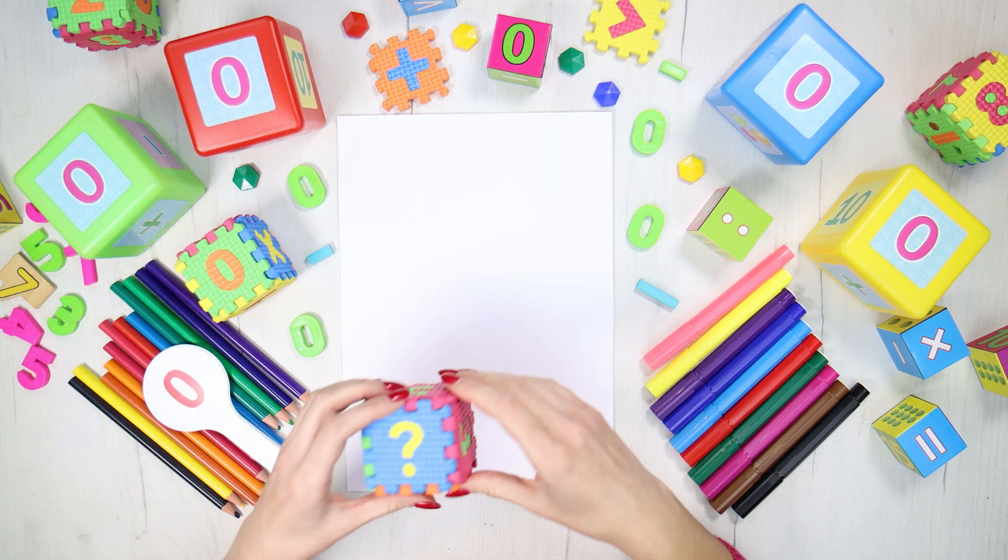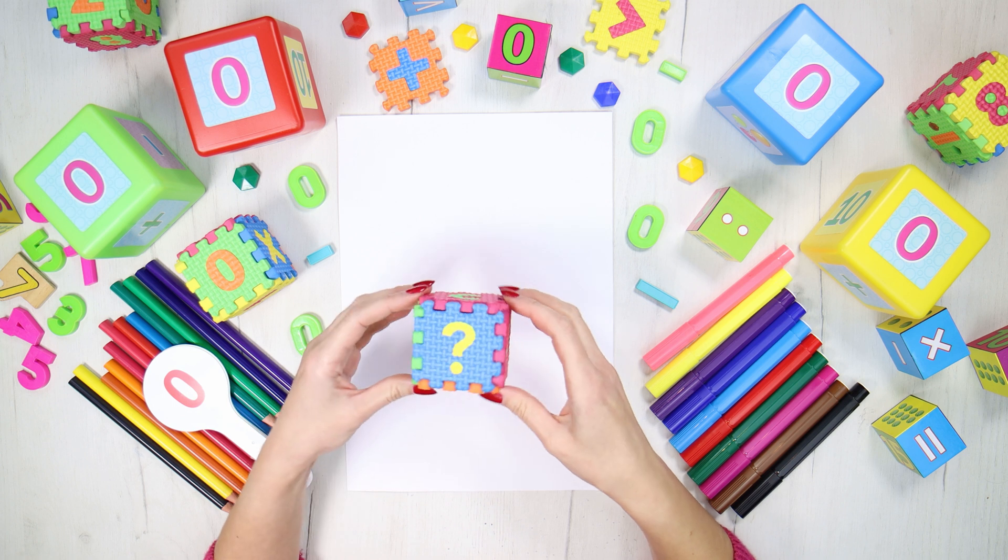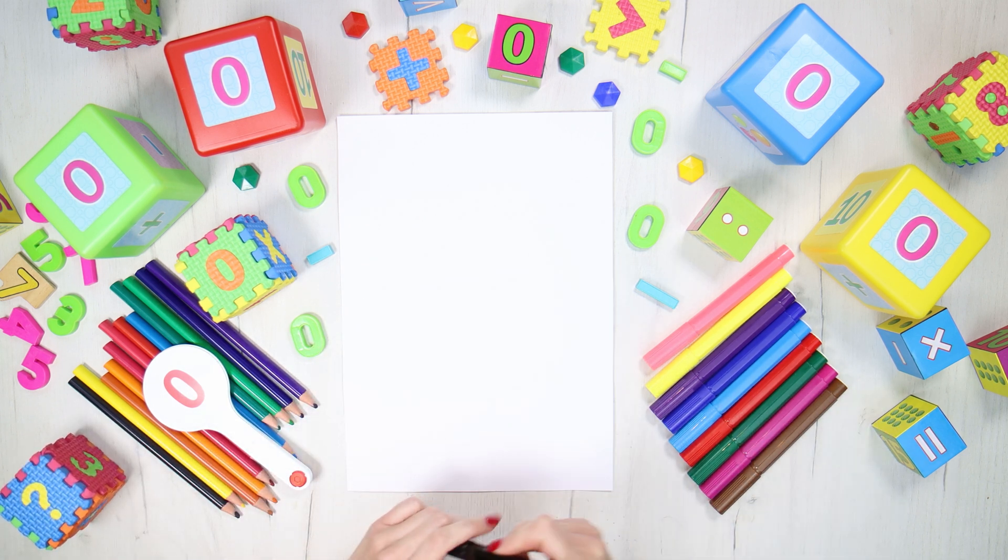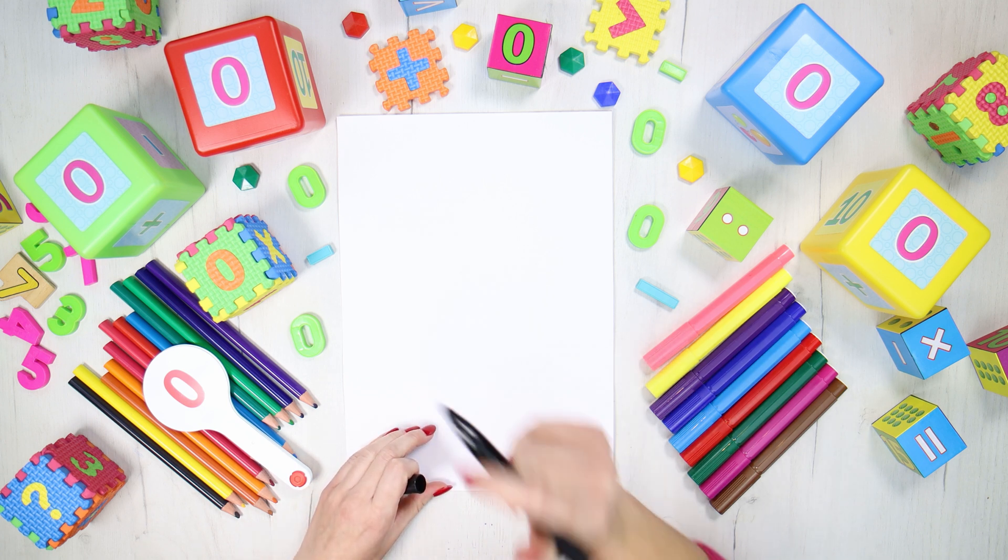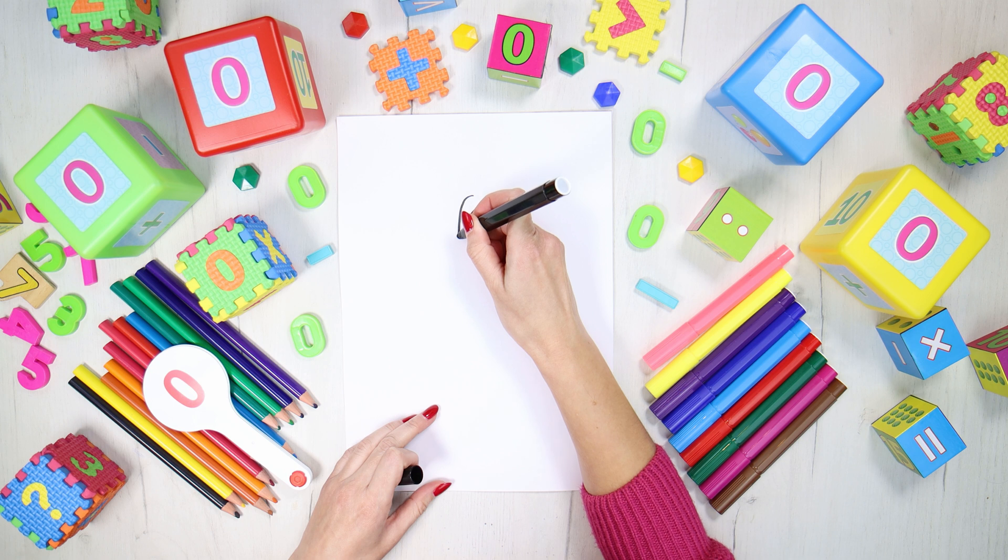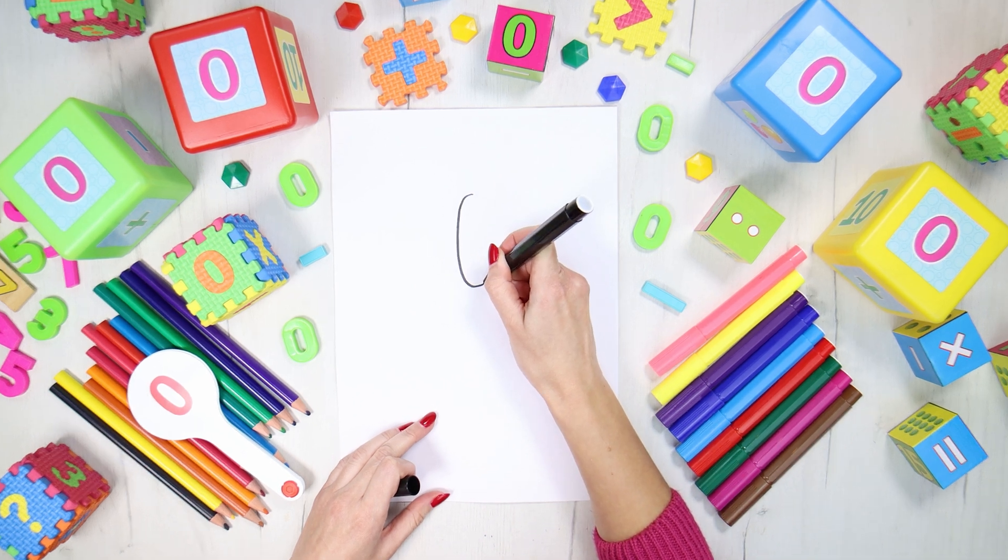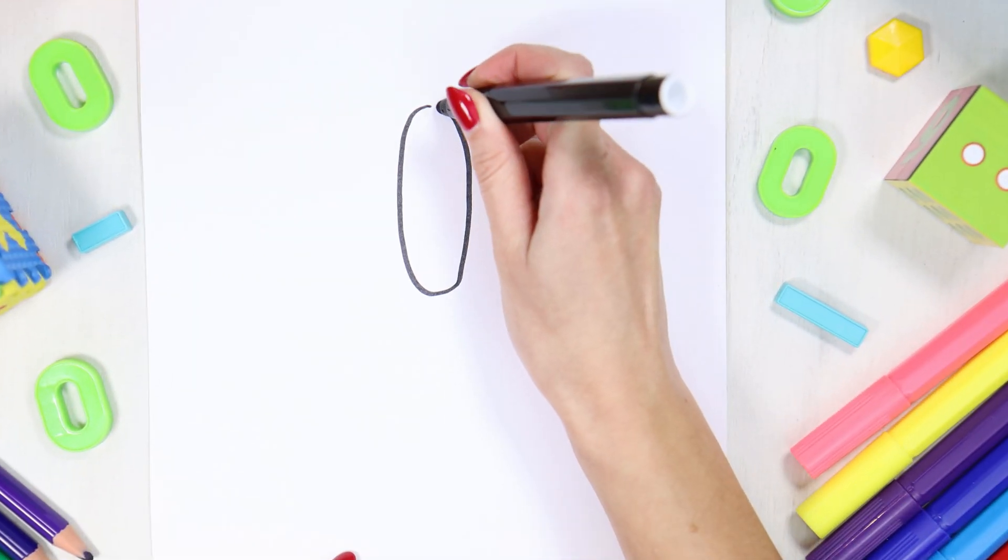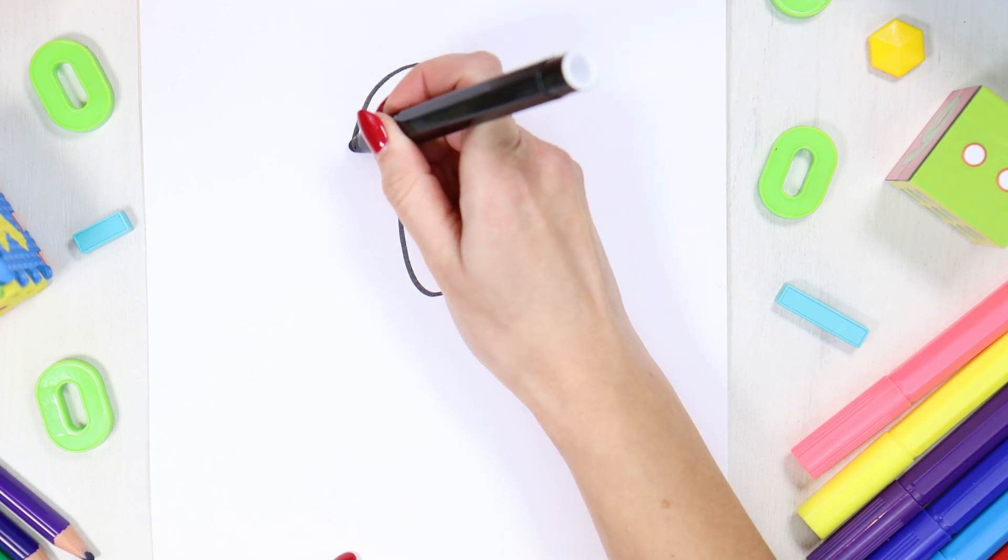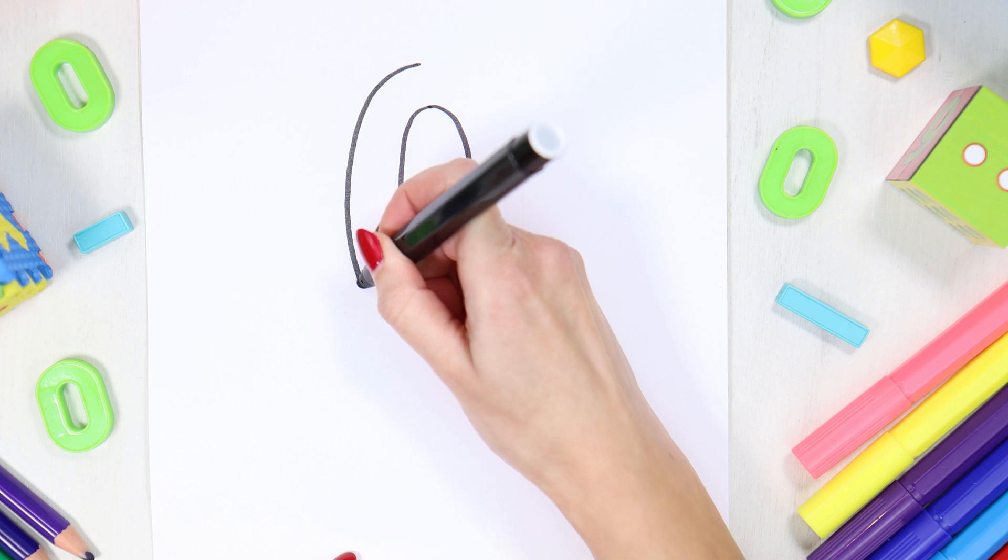At first, let's find out how it looks like and draw it. To do this, take a pencil, felt tip pen, colored pen, everything you have, everything you like, and draw the outline of the numeral 0 with me.